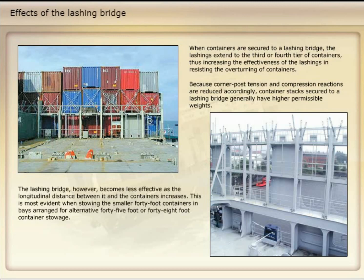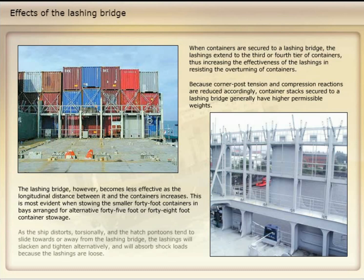This is most evident when stowing the smaller 40-foot containers in bays arranged for alternative 45-foot or 48-foot container stowage. As the ship distorts torsionally and the hatch pontoons tend to slide towards or away from the lashing bridge, the lashings will slacken and tighten alternately and will absorb shock loads because the lashings are loose.